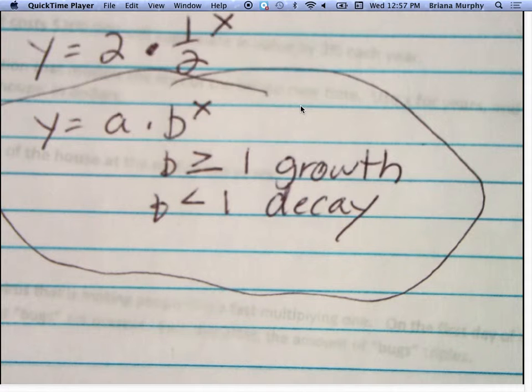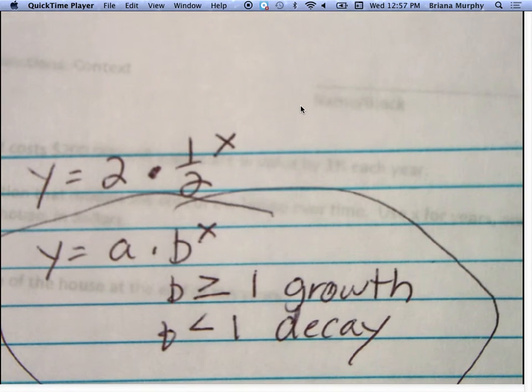And b is telling me the rate at which it changes. And x almost always has to do with time, but it's whatever your independent variable is. So let's look. We're going to do a couple problems from your sheet.